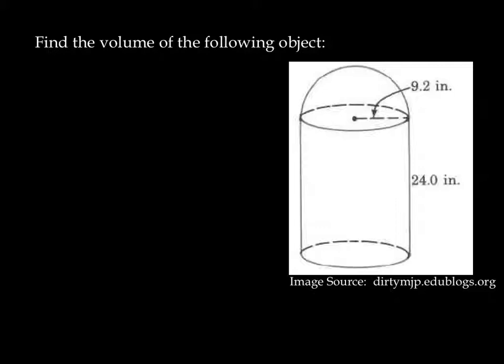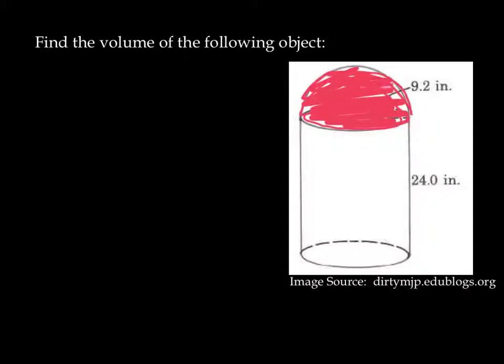To do a composite object volume, it's actually just using the things that we've already seen. We're going to find the volume of each part of the object. Here I can identify two sections: there is a hemisphere over here in red, and there is a cylinder on the bottom.